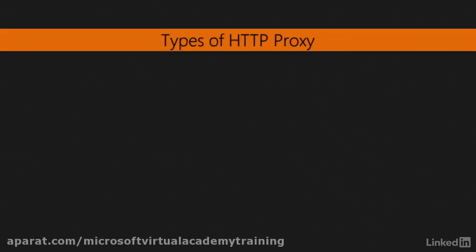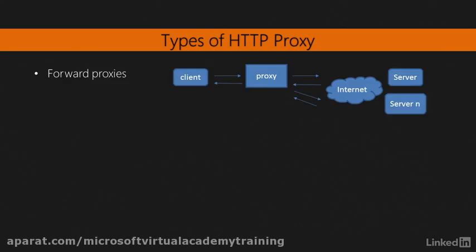When it comes to HTTP proxies, there are a few different distinctions that we should make. Forward proxies — this is the most common example of proxies. Forward proxies are the ones where the client sends the request to the proxy, and the proxy fetches the resource on his behalf. In this case, the user chooses to, or is forced to, use a proxy in a company. The user knows that a proxy is being used, but the server doesn't.